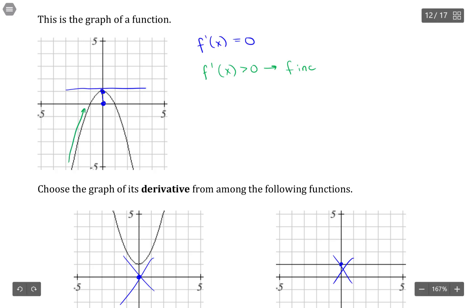So on this interval, I am increasing. So my first derivative should be greater than zero there, and then over here on this interval, a function is decreasing. So my derivative needs to be less than zero.